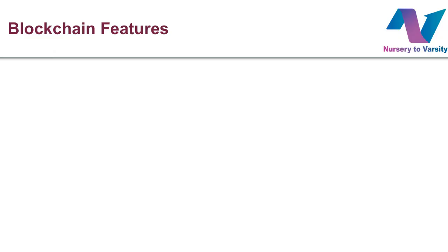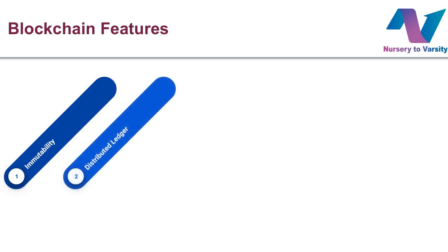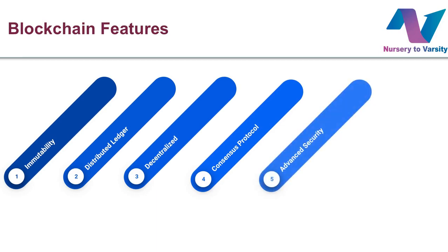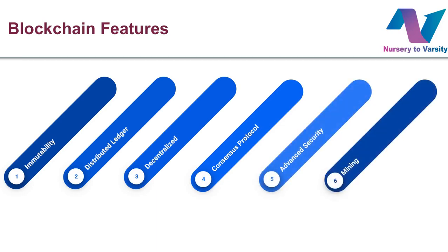There are six major features of blockchain: immutability, distributed ledger, decentralized system, consensus protocol, advanced security — that is cryptography — and mining. In this video we are going to discuss immutability and distributed ledger.